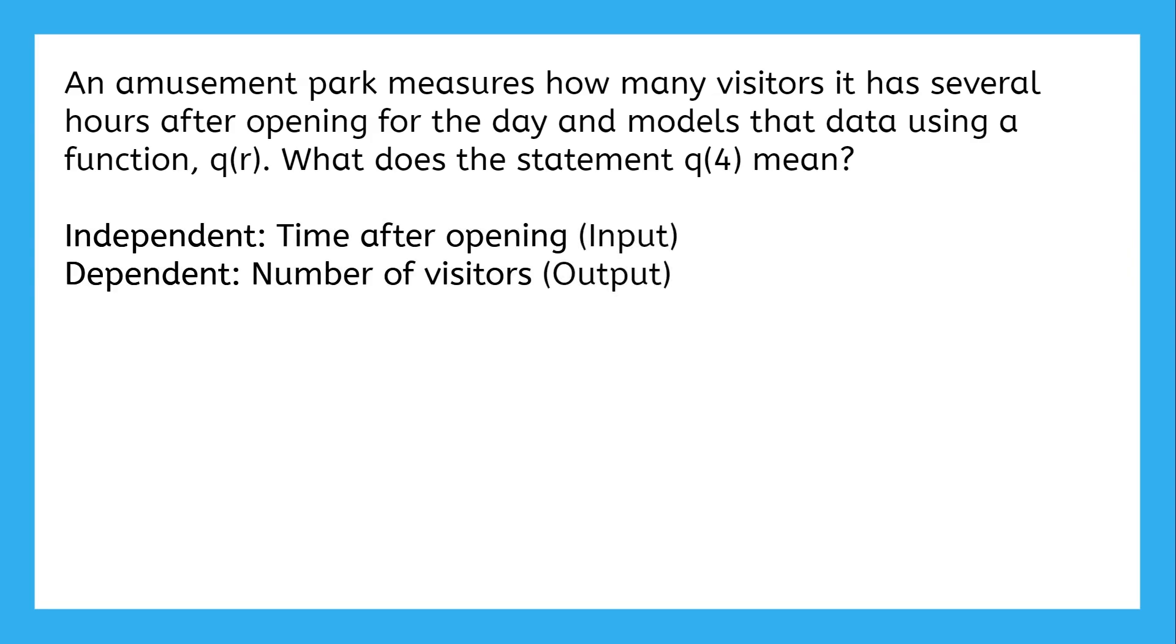The input is always independent, and output is always dependent. So then, according to the function notation q of r, what variable is the time and which is the number of visitors? Well, since r is the input, that will be the independent variable, or the time of day. And the output, function q, is the number of visitors.